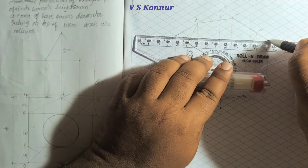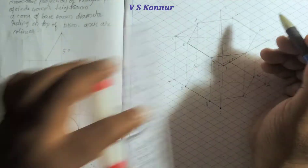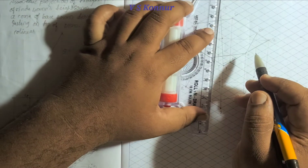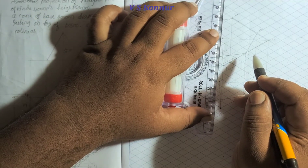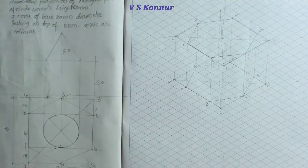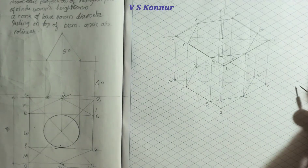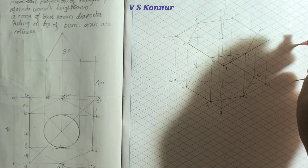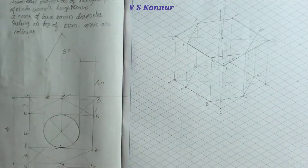To draw the cone at the top of the prism, take the center once again by joining 1 and 3 - the center is obtained here. From this center, take a 90-degree line to mark the height. The height of the cone is 50mm, so we take 50mm upward. From this point we'll cut, and here we get the height.